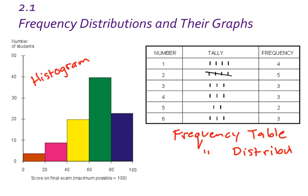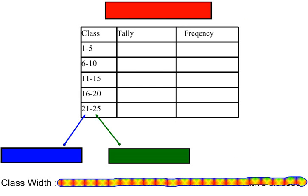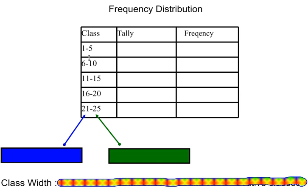So when somebody says distribution, they could be talking about this table as well as this graph, which is a histogram. Let's take a closer look at a frequency distribution. There are a couple of different parts, and one of the things we need to create is called a class.